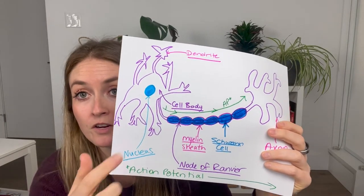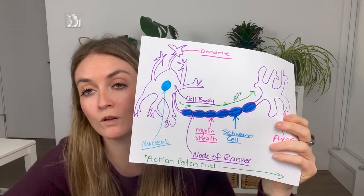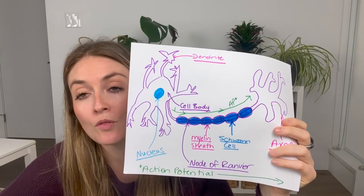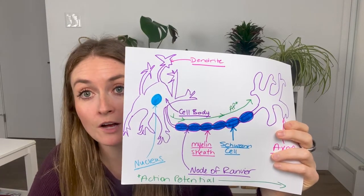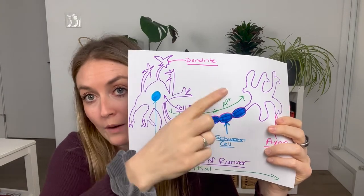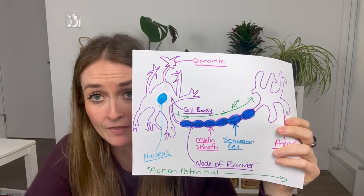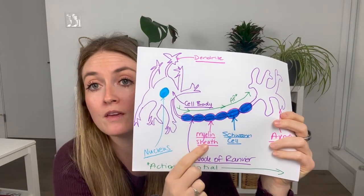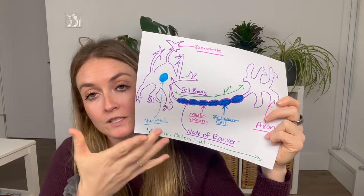Moving along, you're going to see down the center what looks like a beaded string — that's the length of the nerve cell. Around it, we have something called a Schwann cell, which is a single cell that wraps itself around a nerve cell. When they all join together, they create something called the myelin sheath. The myelin sheath is a network of these cells that insulate a nerve cell, help it to be nourished, and also help it to communicate faster. Some cells are not myelinated, some are — it depends on the location in the body and the purpose of the nerve.